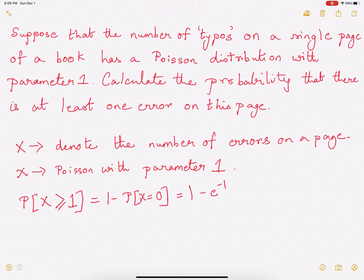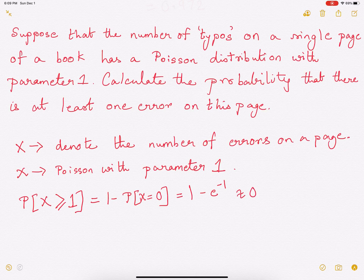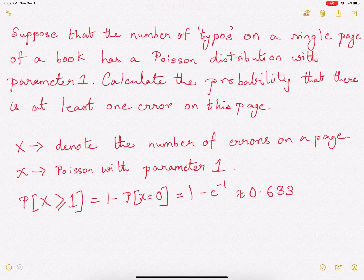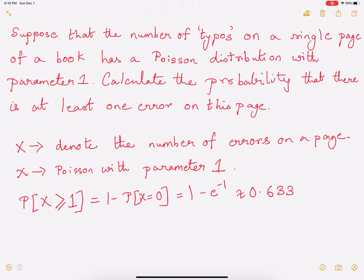So we have probability of X greater than or equal to 1 as 1 minus e to the power of minus 1 which approximates to 0.633. So in this video we looked at how we can use a Poisson distribution and solve a particular kind of problem. Thank you for watching.